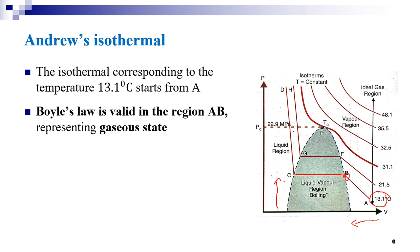The gas gets liquefied and any increase in pressure beyond point C does not decrease the volume further, since liquids are incompressible. Beyond point C, all the gas has converted into liquid and further volume decrease is not observed. The pressure is seen to increase suddenly beyond point C, and the portion CD represents the liquid state of carbon dioxide.